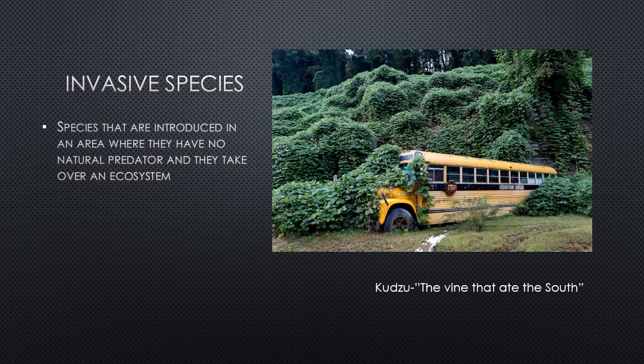Invasive species — kudzu is the best example, called 'the vine that ate the South.' This picture near the Nantahala Outdoor Center near Bryson City, North Carolina, shows the area completely covered in kudzu. Invasive species are introduced with no natural predator, so they take over an ecosystem. Kudzu was introduced to the US from Japan — arriving in 1876 at the Centennial Exposition in Philadelphia.